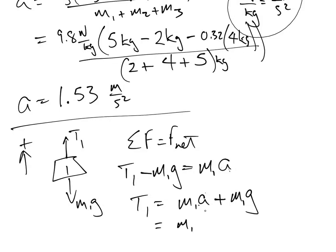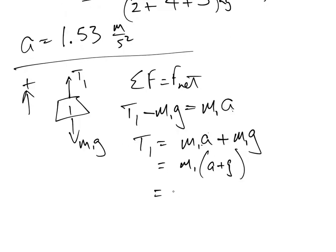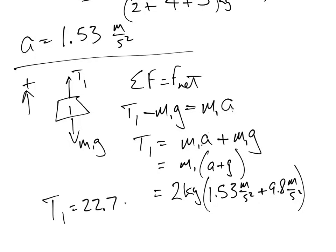And there we go. Factor out the M1. And we're going to get M1 was 2, and acceleration we got was 1.53 plus 9.8. And our answer is going to be I'm getting 22.7. So T1 is 22.7 Newtons. There's half the problem.